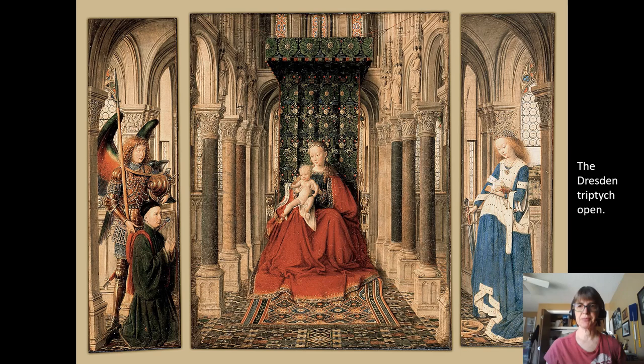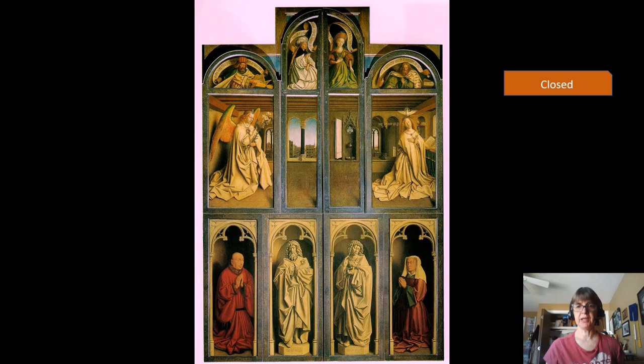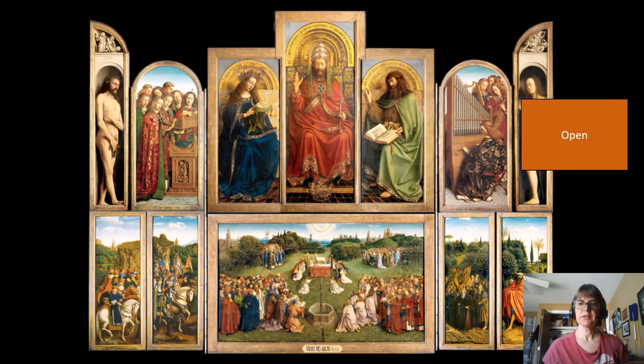Here is an example of a van Eyck triptych — you can see the three panels. This is the open view, and here you have the closed view, which again shows an Annunciation scene with the same kind of Trompe l'oeil style. Now, this is the Ghent Altarpiece in its closed view — what people would see on most days when they went into the church. On holidays and important feast days, the panels would be opened and you could see the glorious inside of the piece.